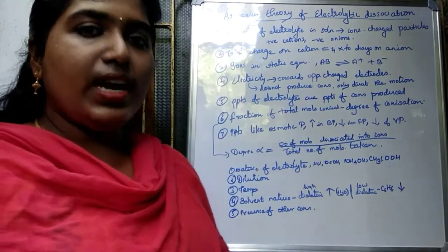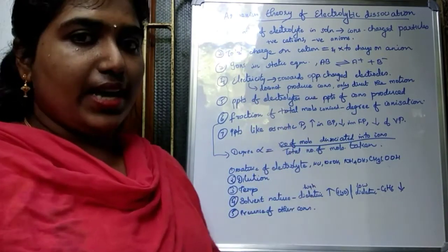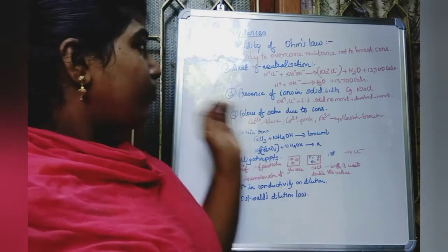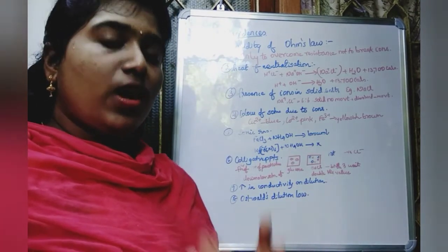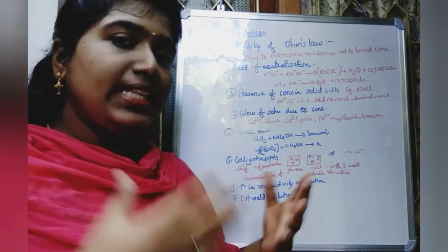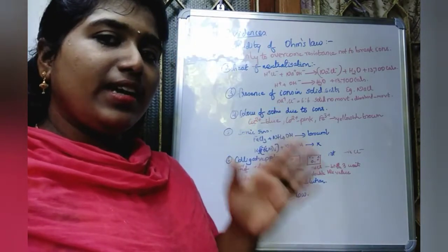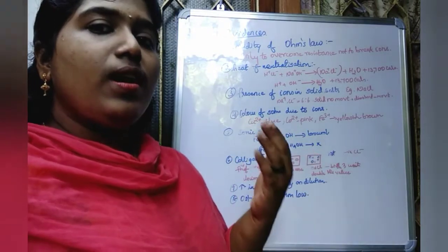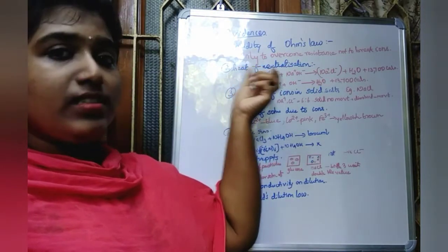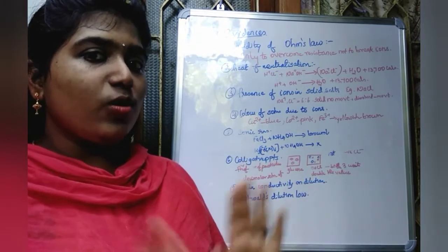These seven are the postulates of the Arrhenius theory of electrolytic dissociation, which is mainly based on weak electrolytes. Next, we discuss the evidences supporting the Arrhenius theory. The first evidence is the validity of Ohm's law. When a small current is passed, the ions immediately start moving towards the oppositely charged electrodes, meaning the current is used only to overcome resistance and move ions — not to break the electrolyte into ions. So electrolytes obey Ohm's law.